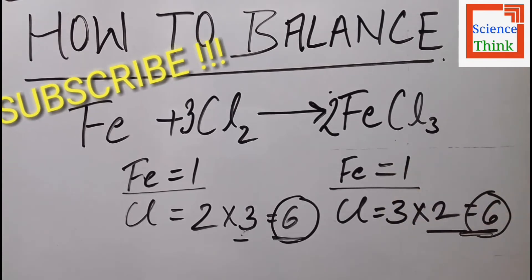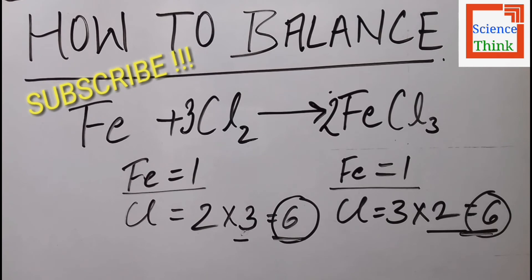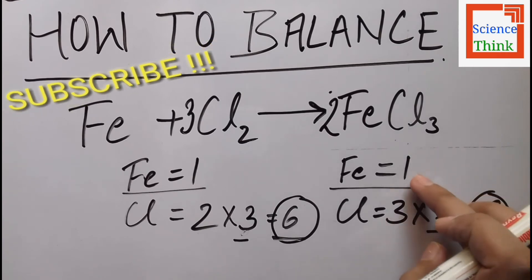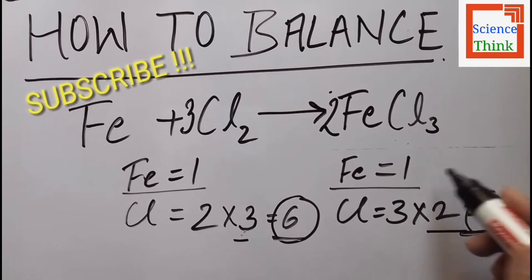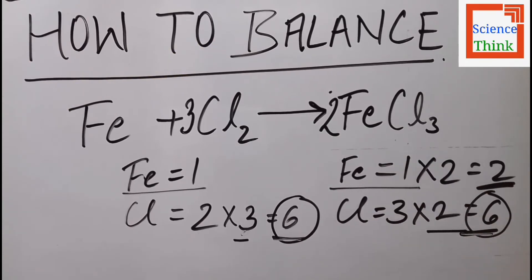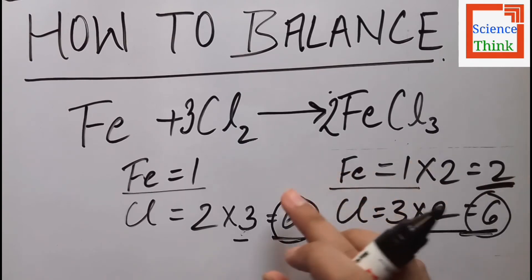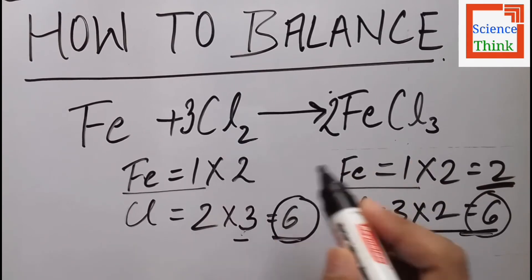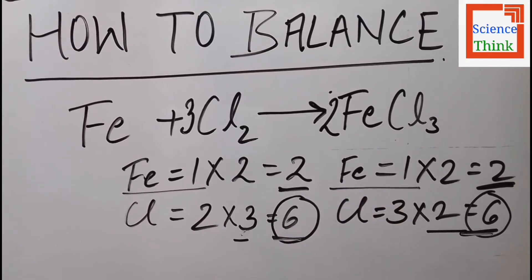By putting two in front of FeCl3, I have not only increased the number of chlorine atoms but also the number of iron atoms. On the product side there are now two iron atoms, but on the reactant side there is only one iron atom. So on the reactant side I'll multiply by two so that it also becomes equal to two.